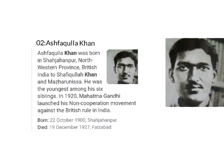The second one is Ashfaqullah Khan. Ashfaqullah Khan was born in Shahjahanpur, northwestern province, British India, to Shafiqullah Khan, and he was the youngest among his six siblings. In 1920, Mahatma Gandhi launched his non-cooperation movement against British rule in India. On 19th December 1927, Ashfaqullah Khan was hanged to death. His name is written in golden letters in the history of India.